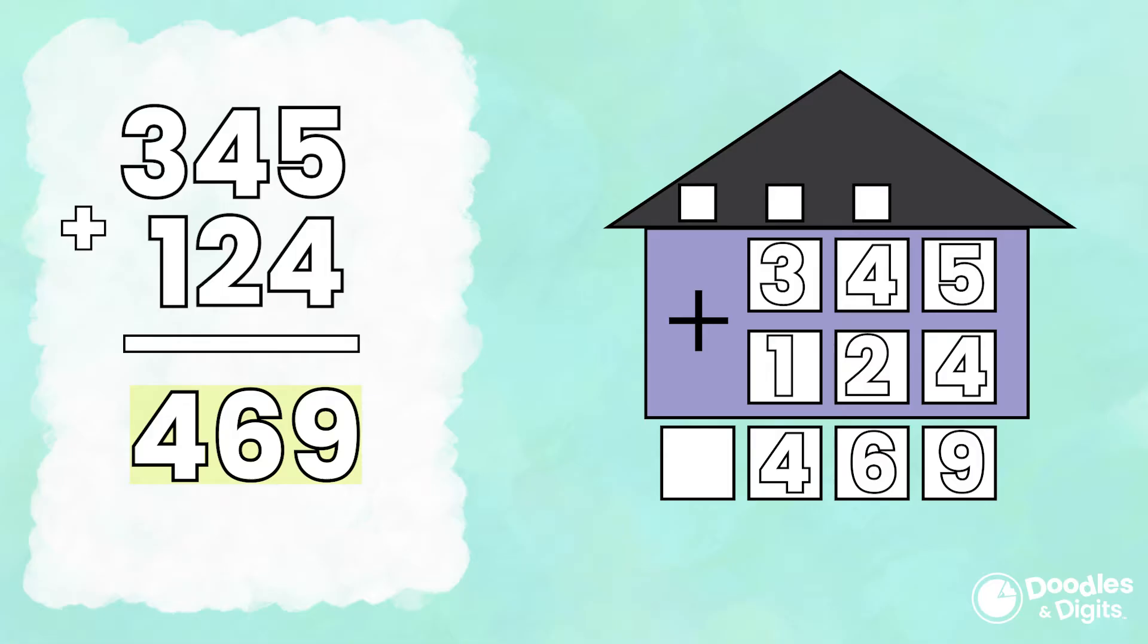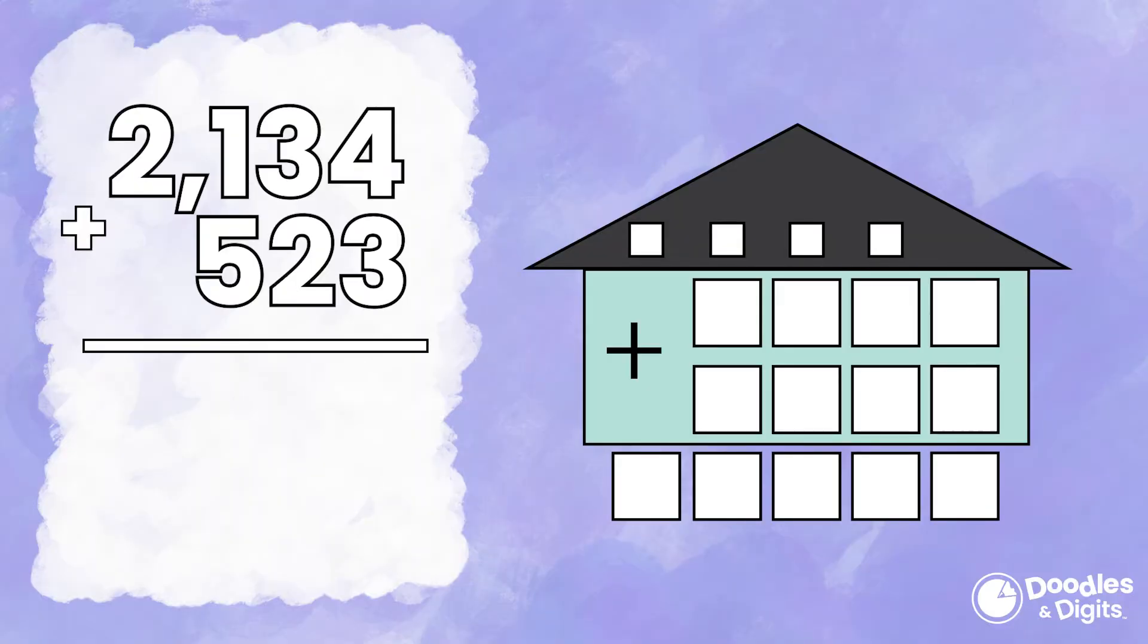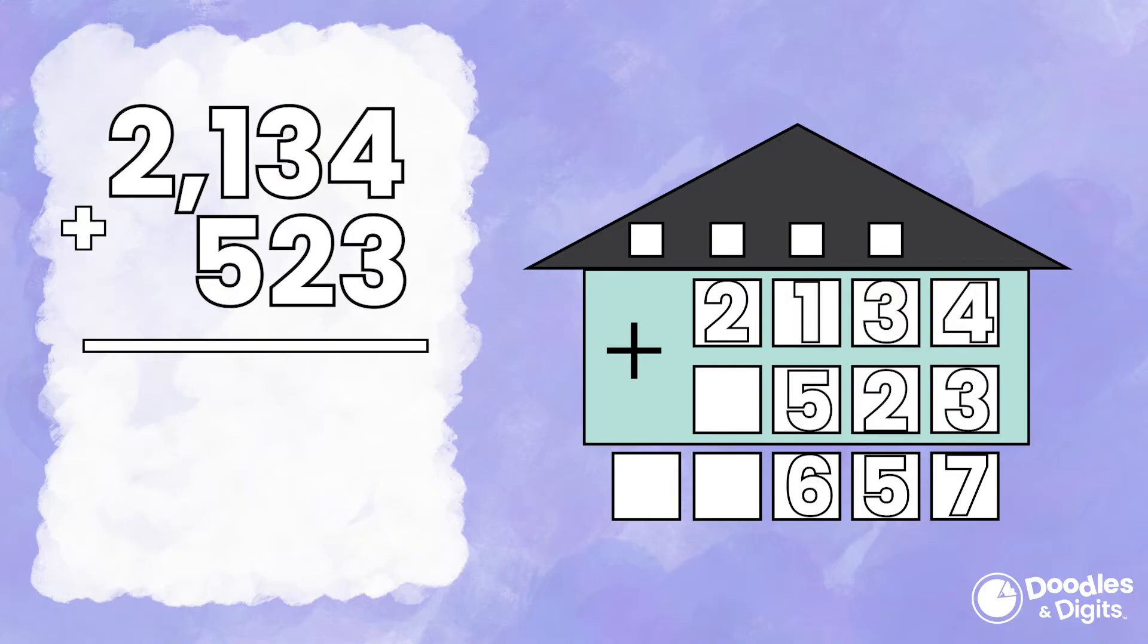Alright, let's try another one. 2,134 plus 523. Start in the ones place. 4 plus 3 is 7, 3 plus 2 is 5, 5 plus 1 is 6, and 2 plus 0 is 2. So our answer is 2,657.